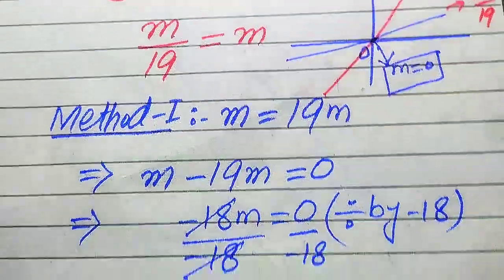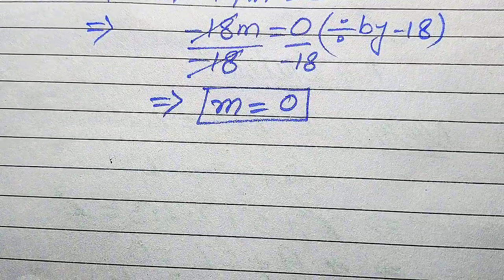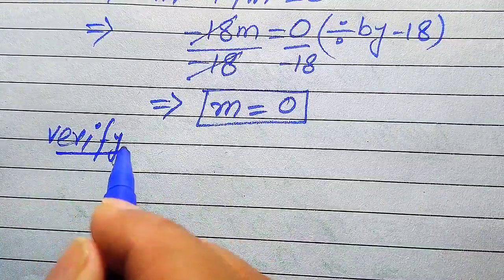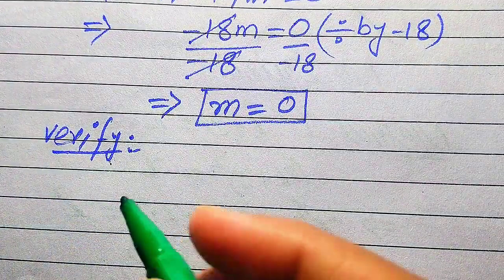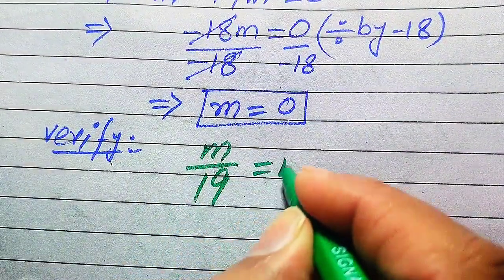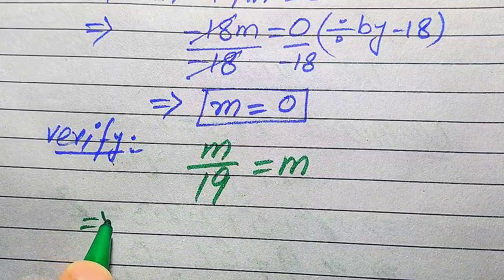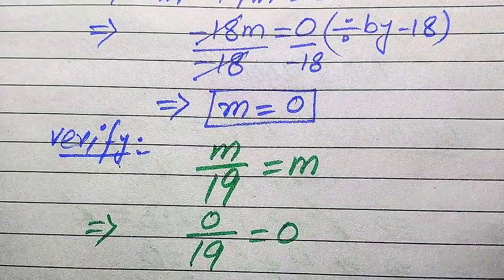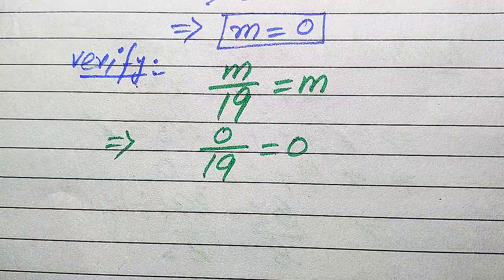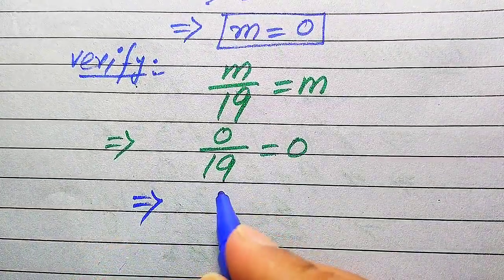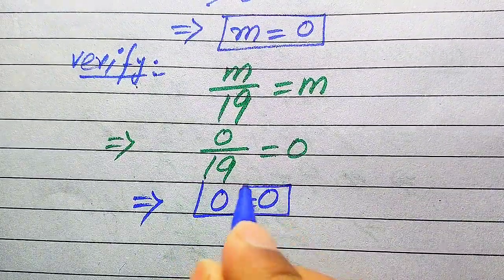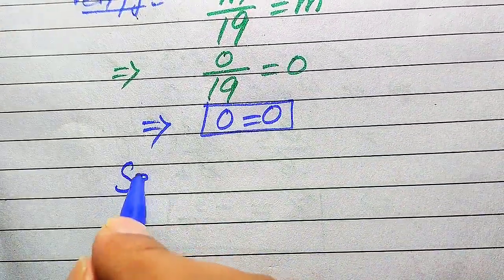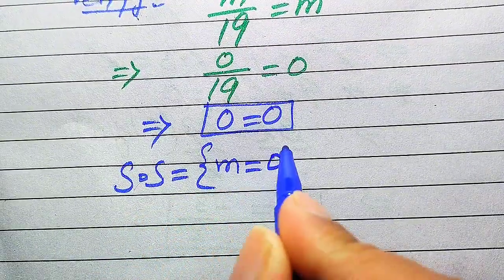Now we verify that m equals 0 satisfies our given equation. Substituting m equals 0 into m divided by 19 equals m gives us 0 divided by 19 equals 0. Since dividing zero by any number is always zero, we get 0 equals 0. Both sides are equal, so m equals 0 is the solution set of the given equation.